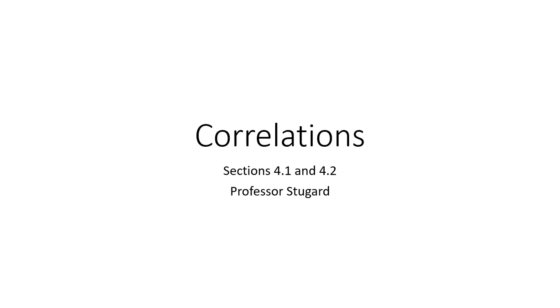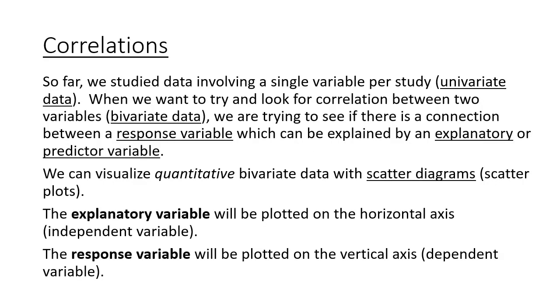Hi, this is our video on Chapter 4, which is about correlations between two different data sets. So far, everything we've studied has involved data that came with just one variable, or what's called univariate data. Now we're going to look at whether we can find correlations or some sort of relationship between two separate variables. This is called bivariate data.